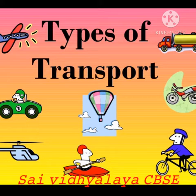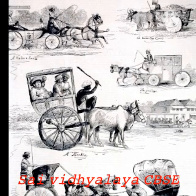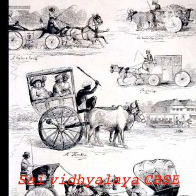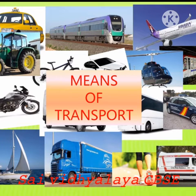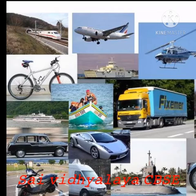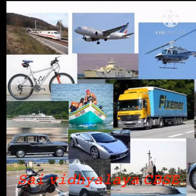Early man traveled on foot. Later he used animals for traveling. We can now travel faster and longer distances than ever before. Transport is the easiest way of movement of humans, animals, and goods from one location to another.